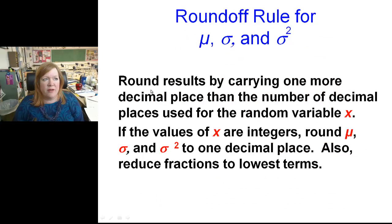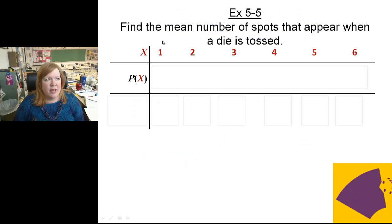Just to remind you, the round off rule for the mean, the variance, the standard deviation, and the variance are that you round one more decimal place than the number of decimal places in your variable x. If the values of x are integers, you round to one decimal place. You also reduce fractions to their lowest terms. Alrighty, so let's do an example.